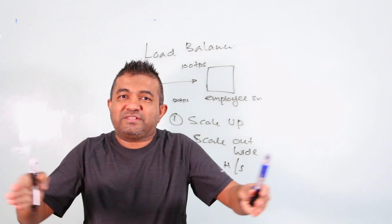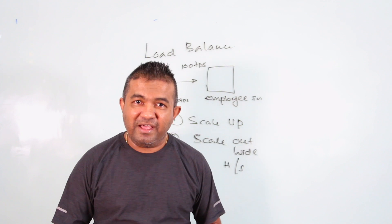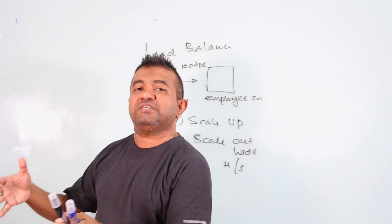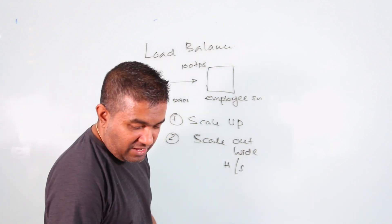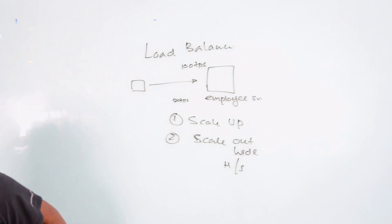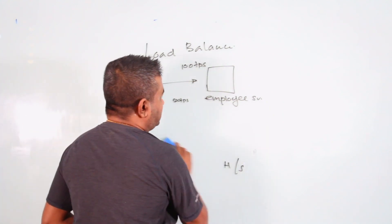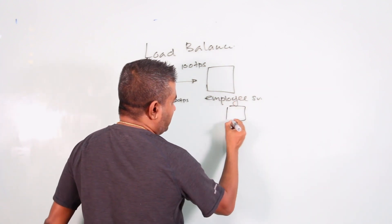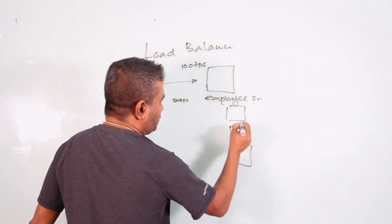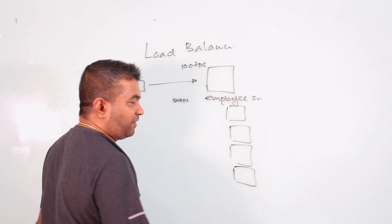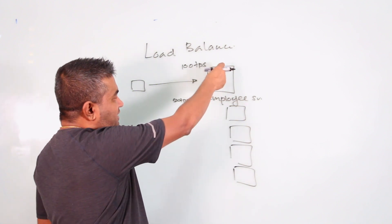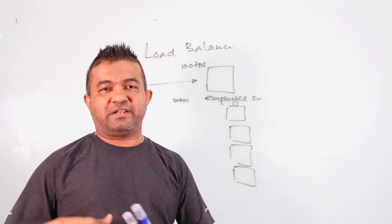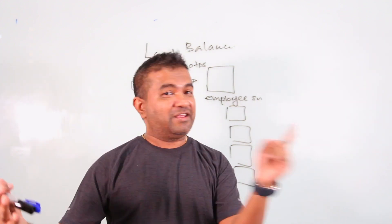The second option is scale out — horizontal scaling. Instead of increasing the performance of one server, you buy and add more servers to your stack. So if we take our example, we add five servers. Each handles 100 TPS, so together all five can handle 500 TPS — problem solved.